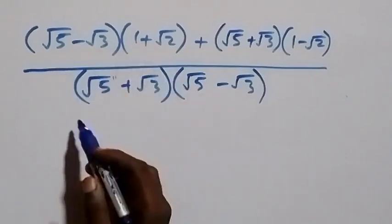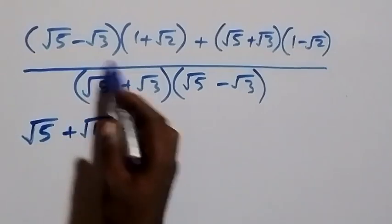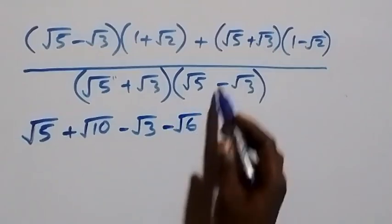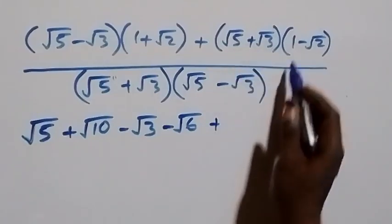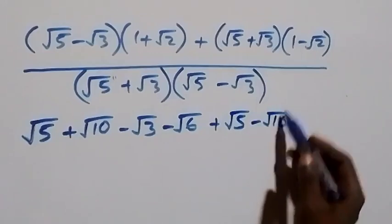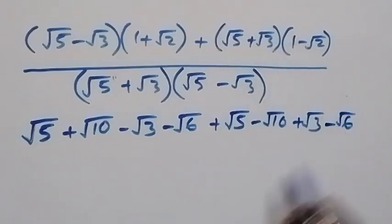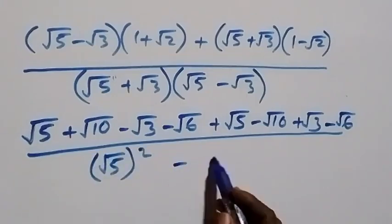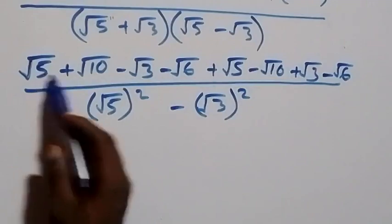Expanding: (√5 − √3)(1 + √2) gives √5 + √10 − √3 − √6. Then expanding (√5 + √3)(1 − √2) gives √5 − √10 + √3 − √6. The denominator is (√5 + √3)(√5 − √3) = √5² − √3².